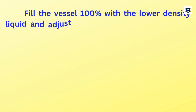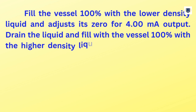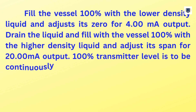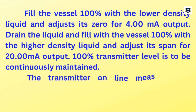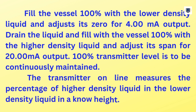Fill the vessel 100% with the lower density liquid and adjust its zero for 4 milliamps output. Drain the liquid and fill the vessel 100% with the higher density liquid and adjust its span for 20 milliamps output. 100% transmitter level is to be continuously maintained. The transmitter online measures the percentage of higher density liquid in the lower density liquid at a known height.